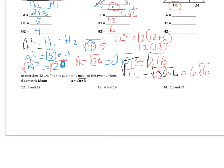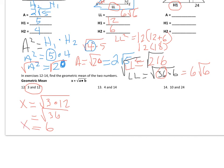The geometric mean. In the past I taught this using similar triangles and proportions, but this is a shorter method. To find the geometric mean between two numbers, take the square root of their product. For numbers 3 and 12, the geometric mean x equals the square root of 3 × 12, which is √36 = 6.